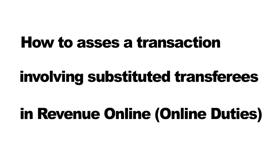This video will demonstrate how to assess a transaction involving substituted transferees. All substituted transferee transactions require a completed substituted transferee application form signed by both the purchaser and the transferee. To assess a substituted transferee transaction in online duties, the original transaction must also have been assessed in online duties. Please note that transactions involving the first homeowner grant cannot be assessed in Revenue Online and must be lodged with the Commissioner.